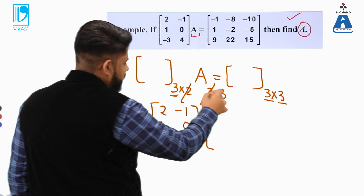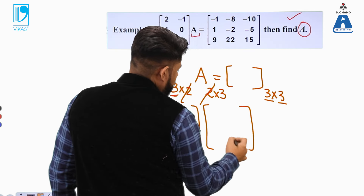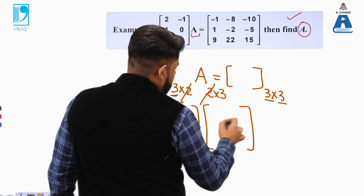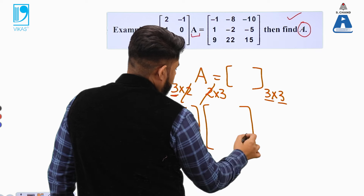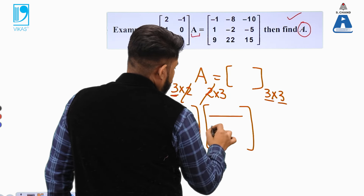The matrix A has order 2×3, meaning 2 rows and 3 columns.